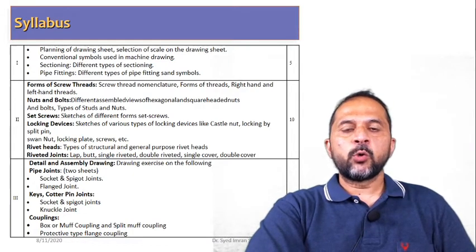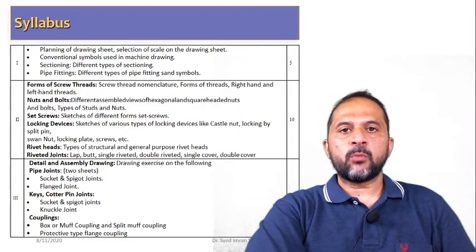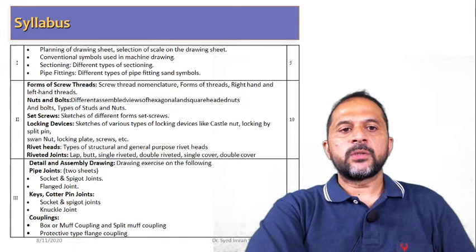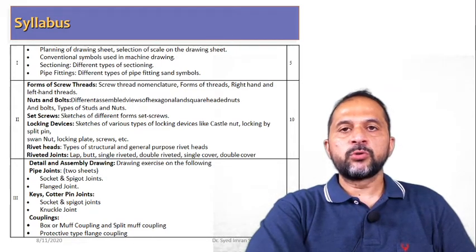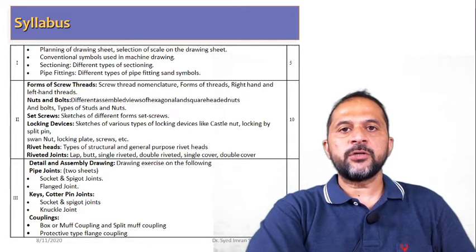Then we will slowly move on to the machine components starting from small components and then gradually to larger ones. We will start with the forms of threads or screw threads. What are the different threads used in screws?